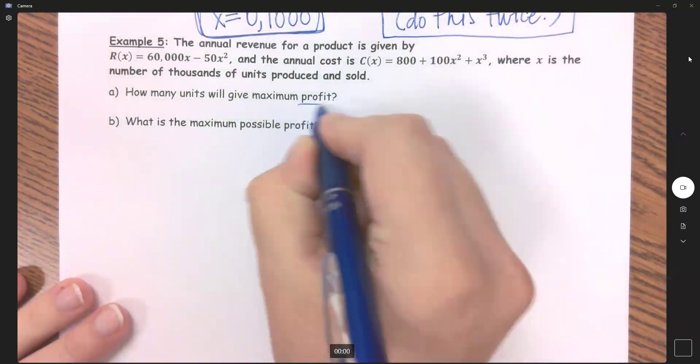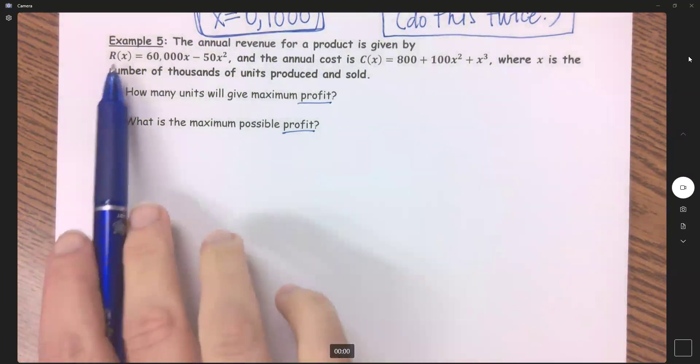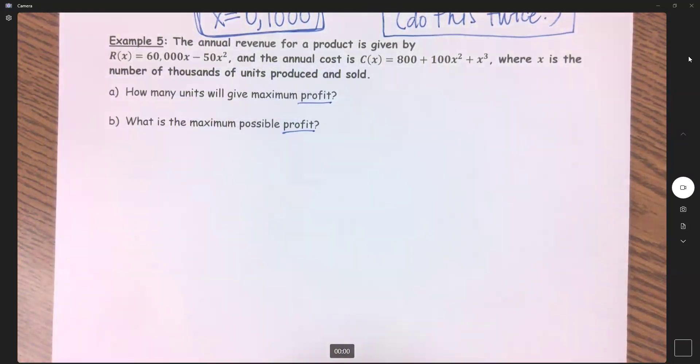So there's a little bit of a problem here. We're needing profit, but what functions am I given? I'm given revenue and cost. So with those, we can find out what my profit function is.